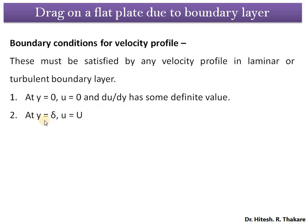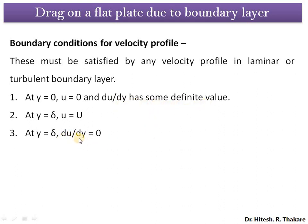The second boundary condition is: at y = delta (the edge of the boundary layer), the velocity of the fluid layer equals the free-stream velocity capital U. The third boundary condition is: at y = delta — the boundary between the free-stream flow and the boundary layer — the velocity gradient du/dy = 0. This is because at that point velocity equals the free-stream value, and beyond that there is no variation in velocity possible, so there is no change in velocity with distance, giving du/dy = 0.